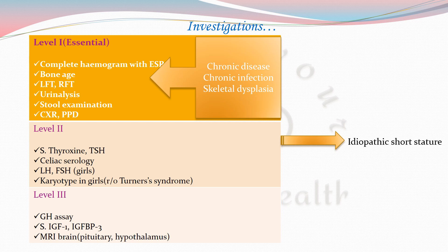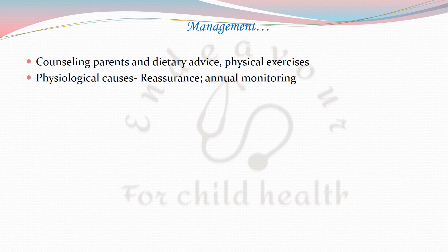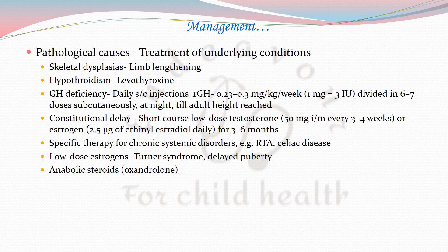For management, physiological causes mainly require counseling, dietary advice, physical exercises, reassurance, and annual monitoring. Pathological causes require treatment of the underlying condition: limb lengthening procedures for skeletal dysplasia, thyroxine supplementation for hypothyroidism, subcutaneous recombinant growth hormone injections for growth hormone deficiency, and short courses of low-dose testosterone or estrogen for constitutional delay.